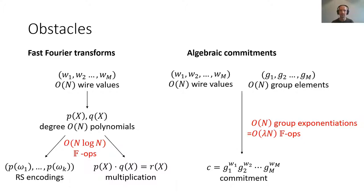Many existing argument systems use fast Fourier transforms or algebraic commitments, and this is an obstacle to achieving the dream we outlined above. If you use a fast Fourier transform on a polynomial of degree O(n), then it costs O(n log n) field operations. On the other hand, if you use algebraic commitments such as the Pedersen commitment scheme, which requires O(n) group exponentiations — on closer inspection, the number of field operations needed to compute a multi-exponentiation depends on the size of the group, so this isn't really a linear cost at all.